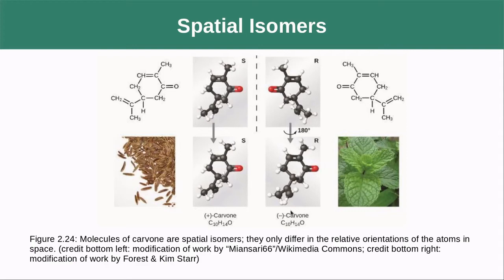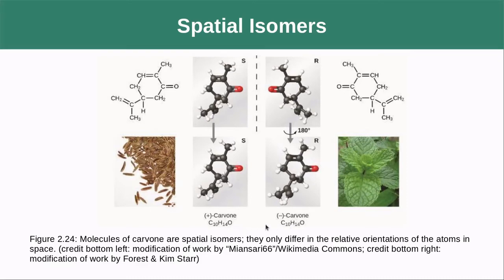Spatial isomers are a little tricky. In this case, the atoms are arranged in the same way except they are actually mirror images of each other — like how your left hand is similar to your right hand but they're not superimposable. Your left glove doesn't fit on your right hand. Pay attention here: one molecule has a hydrogen sticking towards us, while in the other that hydrogen is sticking toward the back.